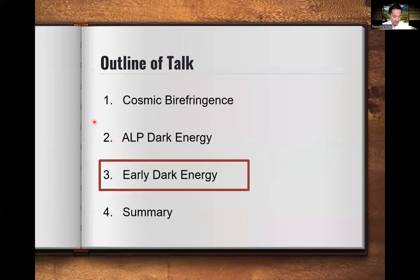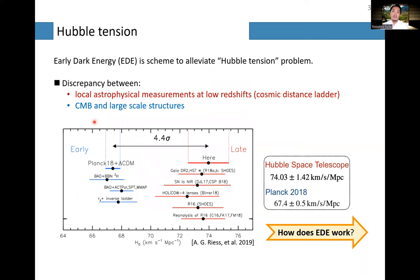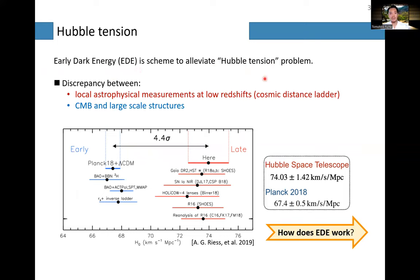I still have about 10 minutes, so let me quickly go through the early dark energy discussion. I mentioned that the Lambda CDM paradigm works very well, but we have some exceptions. One is the Hubble tension. Early dark energy is a scheme to alleviate it. So what is the Hubble tension?